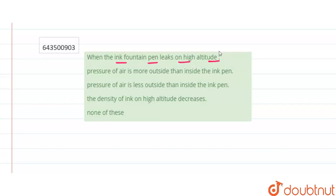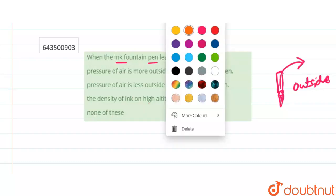Do remember that if something is coming out, if ink is coming out, it means that inside the ink pen there must be higher pressure and outside pressure would be lower.